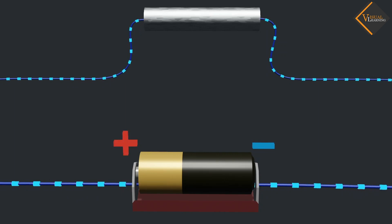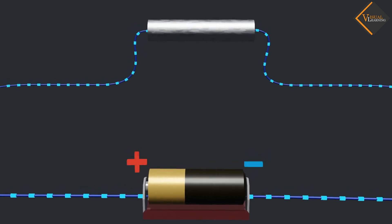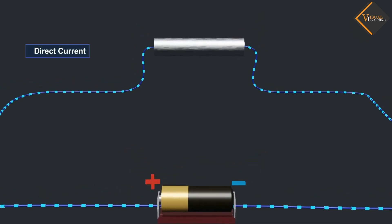When the current flows in a single direction and its direction doesn't change with time, we call it direct current DC.